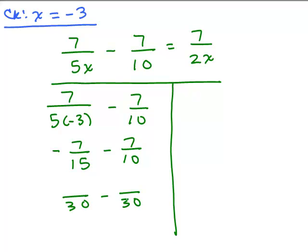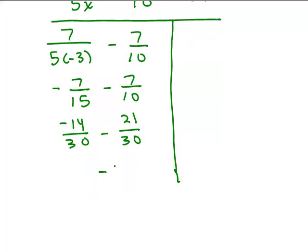If I make them both thirtieths, I'd have to multiply the first fraction by 2 over 2, so that'll be negative 14, and the second fraction by 3 over 3, that's 21. So I have negative 14 minus 21 is negative 35 thirtieths. And then that reduces—I could divide top and bottom by 5—so negative 7 sixths. That's the left side.